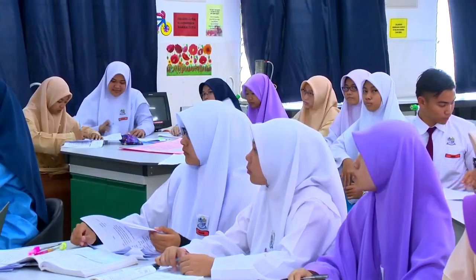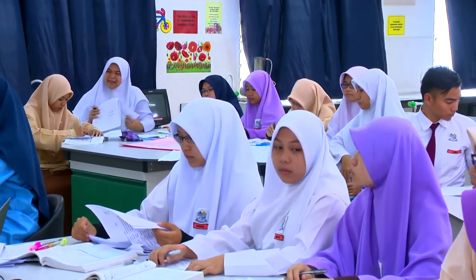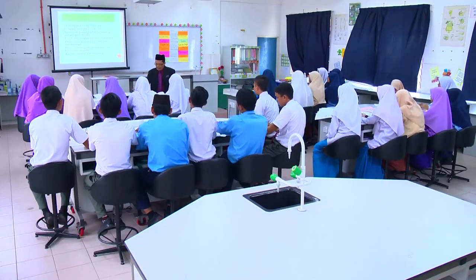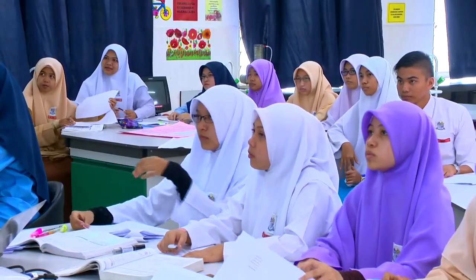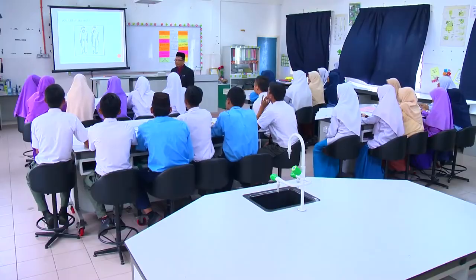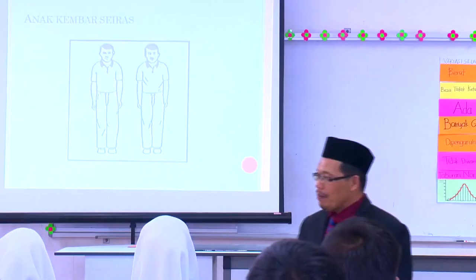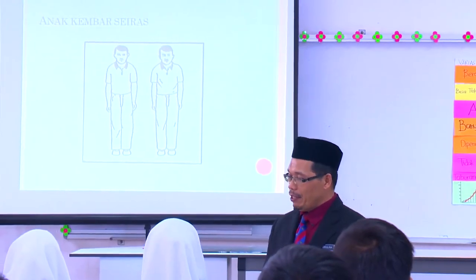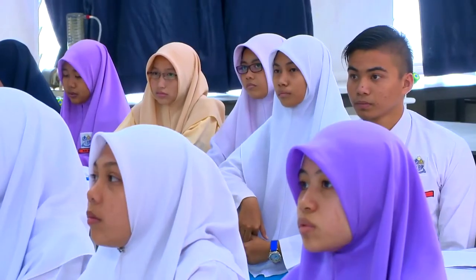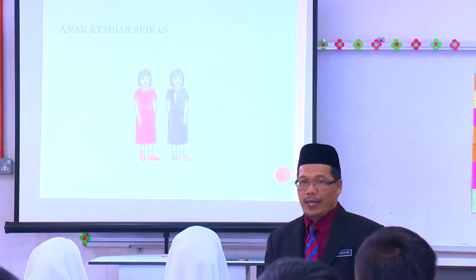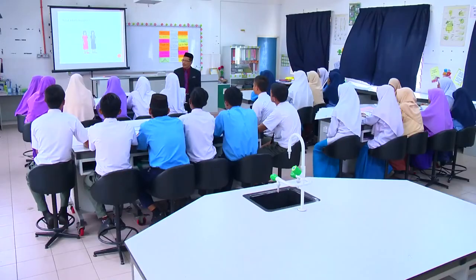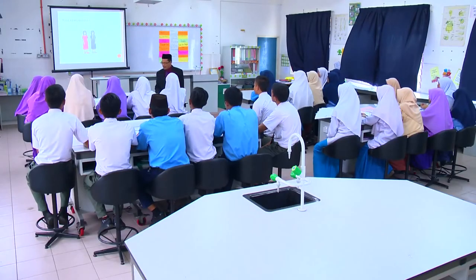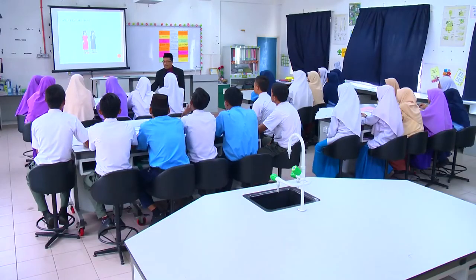Untuk seterusnya, cuba kita beri perhatian kepada skrin yang saya paparkan ini. Di sini gambarnya ialah anak kembar seiras, iaitu sepasang anak lelaki. Kemudian satu lagi, sepasang anak perempuan. Macam mana dengan wajah, rupa paras dan sebagainya? Hampir sama kan?